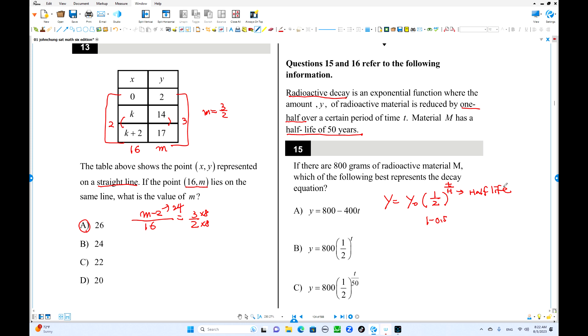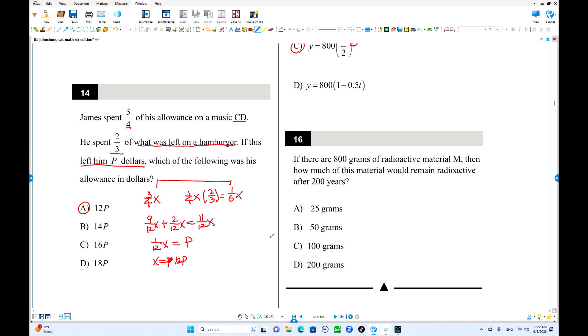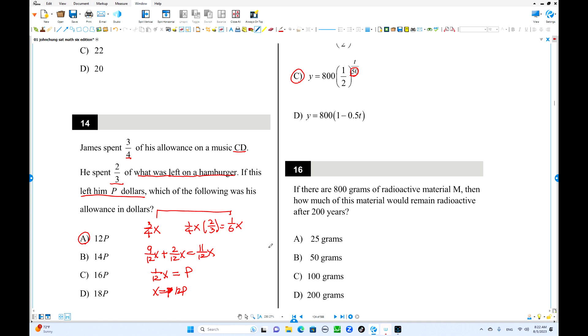So initial amount is 800, half-life is 50 days. Number 16, using the equations we can find how much remains radioactive after 200 years. So 800 times one half, 200 years, 200 over 50 is 4. So that is 800 times 1 over 16, that is 50. That's it.